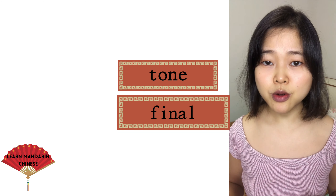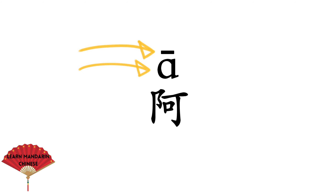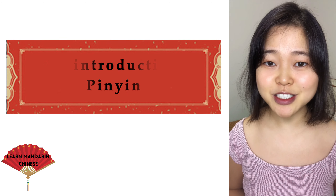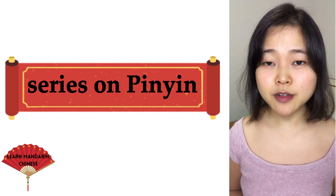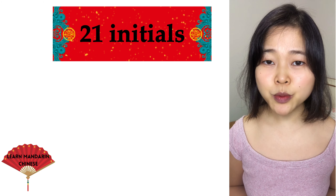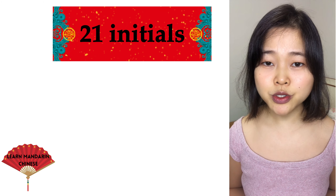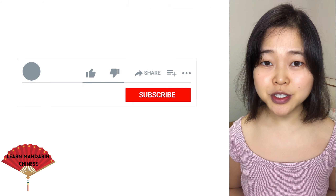In pinyin, there are 26 letters — just like English — except instead of v, there's ü (u with two dots on top). Each Chinese character has a pinyin syllable. A pinyin syllable has three parts: an initial, a final, and a tone. The tone mark is always on top of the final.